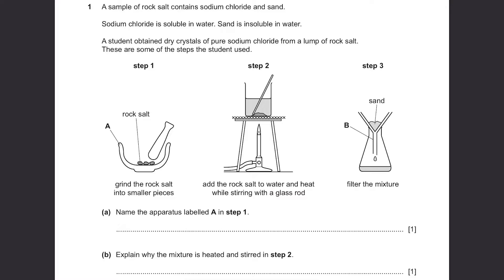Step 1: He grinded the rock salt into smaller pieces. Step 2: The rock salt was added to water and heated while stirring with a glass rod. This lump is probably just sand because sodium chloride is soluble in water. Step 3: It was filtered, so sand was left here as the residue. And this liquid is probably sodium chloride plus water.